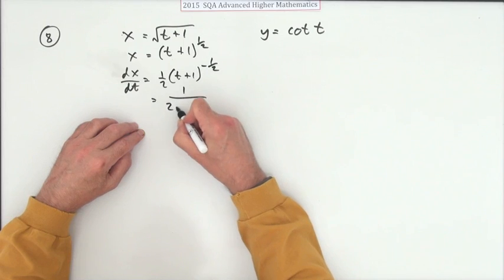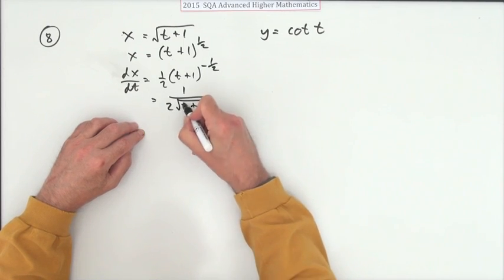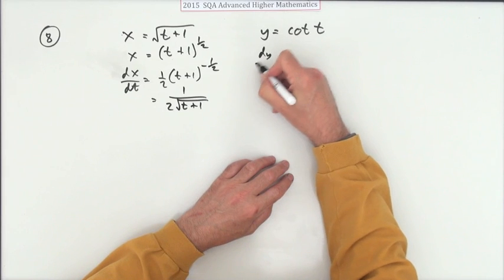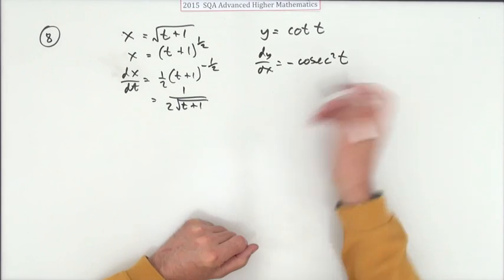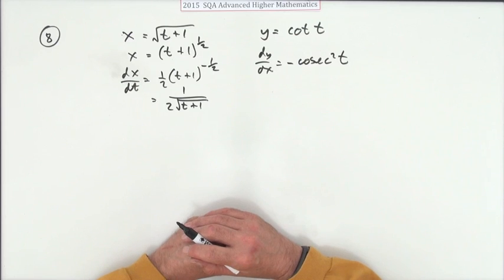And dy by dx would be negative cosec squared t, or you could change that into sine squares if you like.